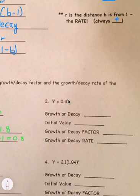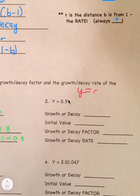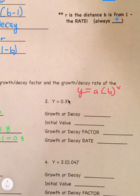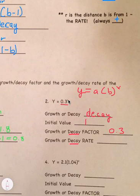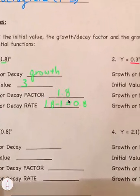For number 2, y equals 0.3 to the x power. There's no second number, so using y equals a times b to the x, that means a equals 1. Our b value is 0.3, which is between 0 and 1, so this is decay. The initial value is 1, the decay factor is 0.3, and the decay rate is 1 minus b — so 1 minus 0.3 equals 0.7.